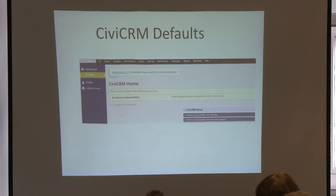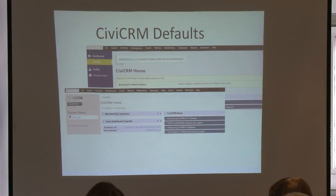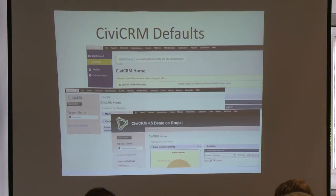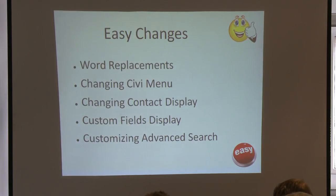So Valerie's going to start. You've noticed sometimes CiviCRM is not as sexy as you wish it would be, but it's improving — version 4.6 is better. The idea is to have easy changes through the administrator menu. So I'm going to talk about word replacement, changing the CiviCRM menu, changing contact display, custom field display, and customizing advanced search. These are basic things, but sometimes users don't know they can, with a few clicks, change and customize CiviCRM.